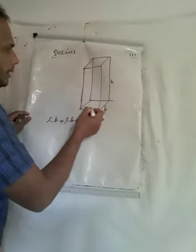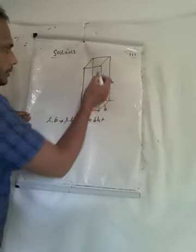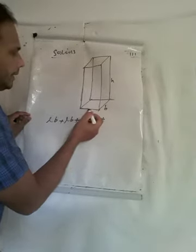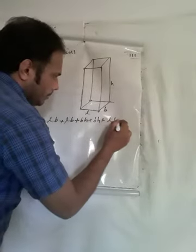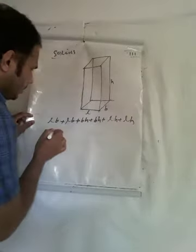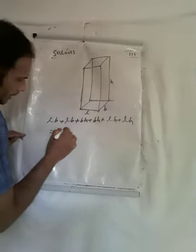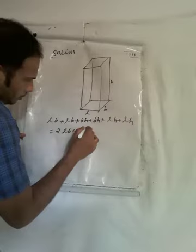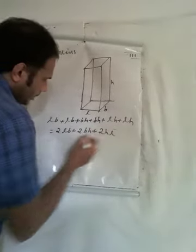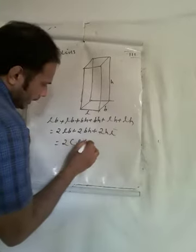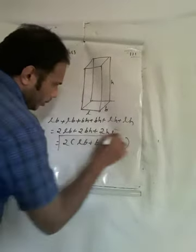The front face area means L × H, giving LH. Plus the back face, also LH. So in total: 2LB + 2BH + 2LH, which equals 2 into (LB + BH + LH). This is the total surface area of a cuboid.